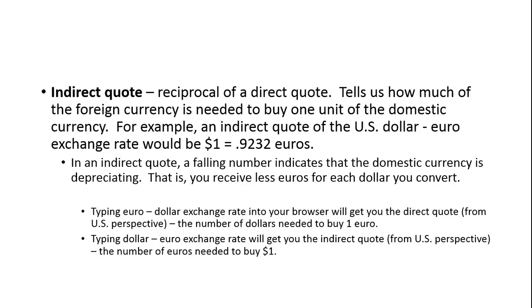The first currency listed is referred to as the base currency. If you type in 'euro dollar exchange rate' into your browser, you'll get the direct quote from the US perspective — the number of dollars needed to buy one euro. If you type 'dollar euro exchange rate,' you'll get the indirect quote — the number of euros needed to buy one US dollar.